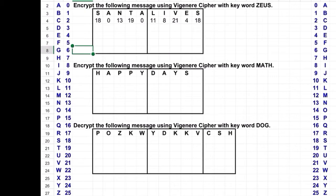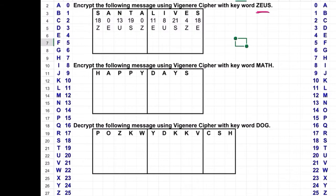In this first example we're going to use a keyword Zeus. So then what I'm going to do in the next row is write down the word Zeus over and over again so that I have exactly the same number of letters as I do in the message that I want to encrypt. Notice I needed an extra ZE to finish off the message.